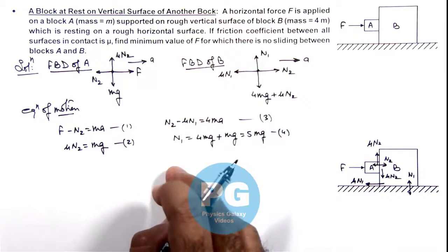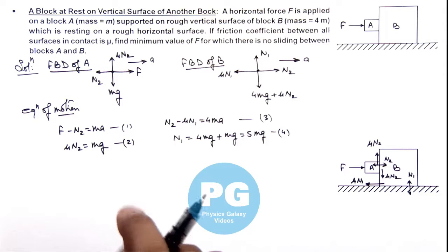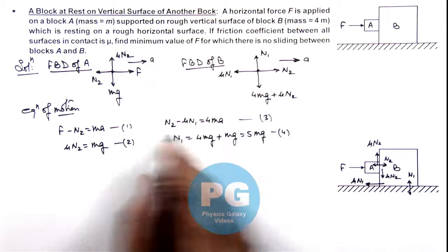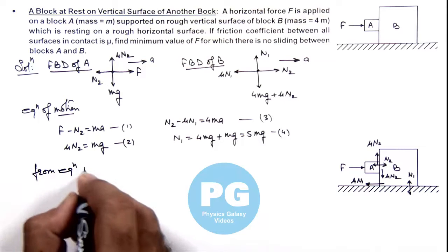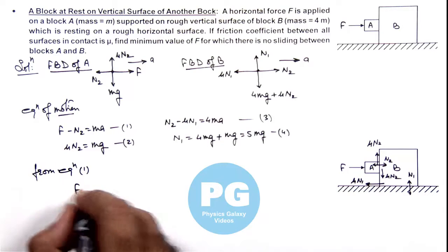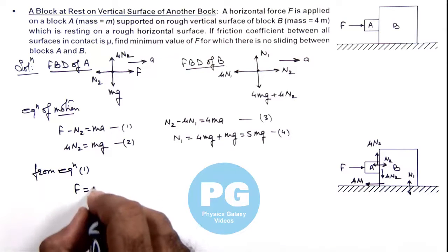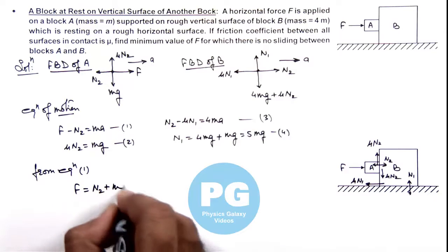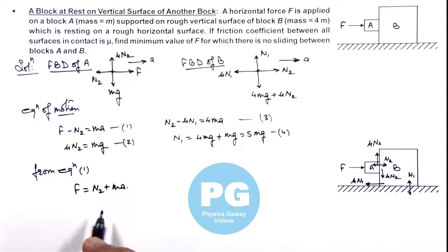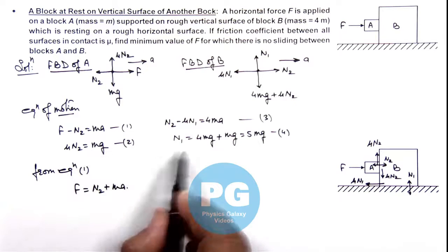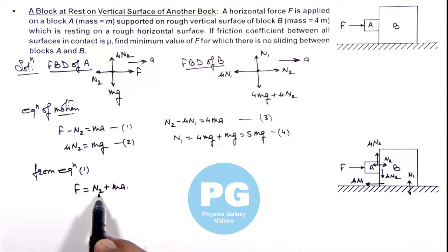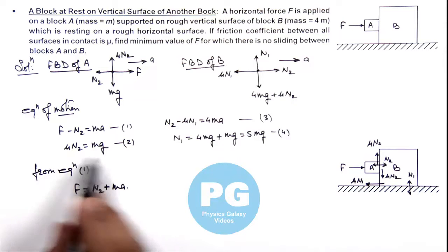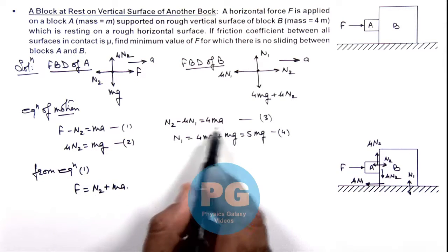And solving these we can calculate the value of F. As here you can see from equation 1 directly I can write the value of F is equal to N₂ + ma. And if we substitute the value of N₂ and N₁ in equation 3 we can get the value of N₂ directly here as mg/μ and a directly from this relation.